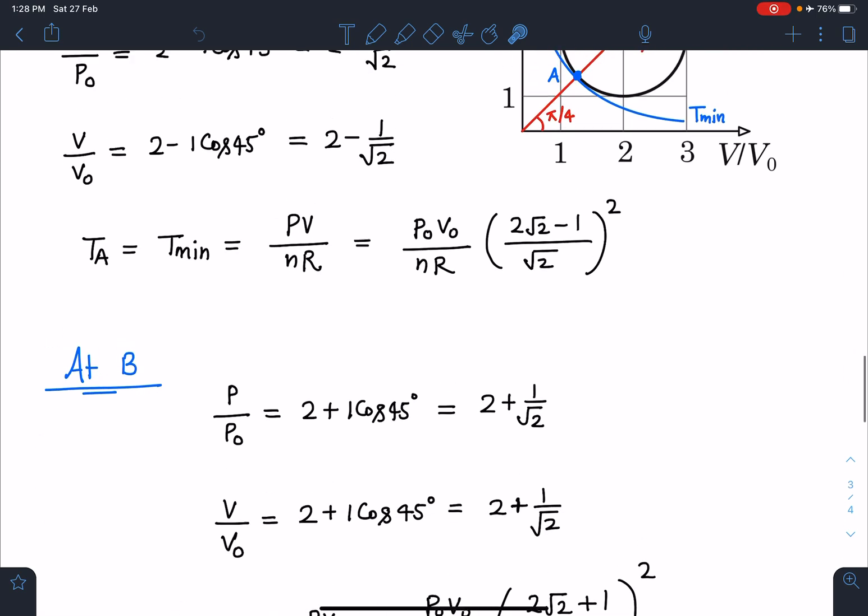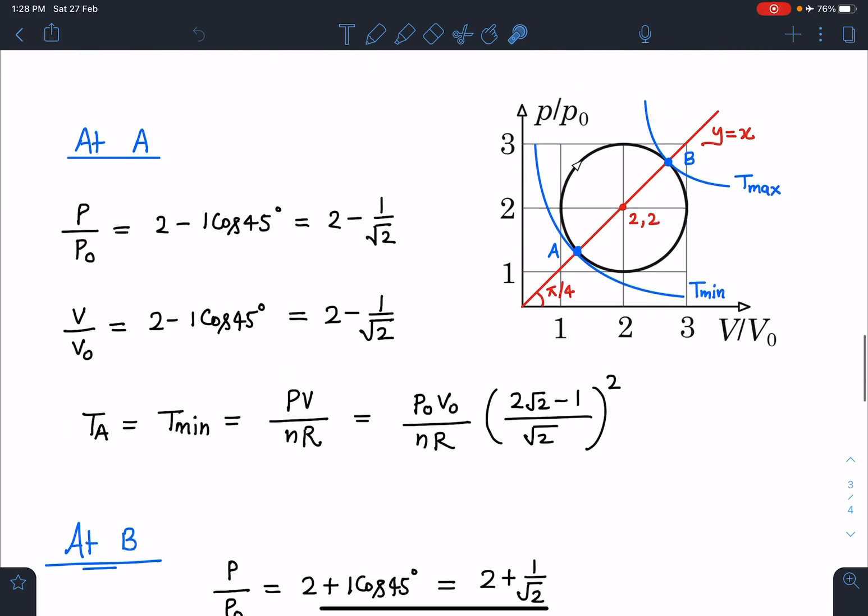Similarly, I can do the same thing at point B. This is point B. I know the coordinates of point B. You can see here it is 2+1·cos45°, and similarly the y-coordinate is 2+1·cos45°.